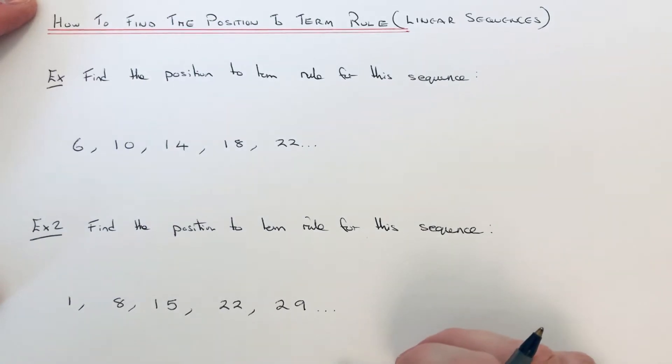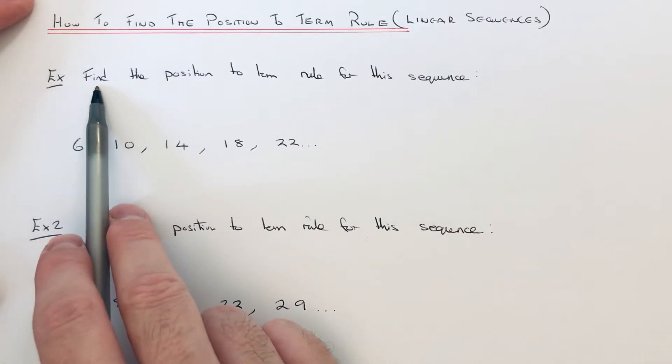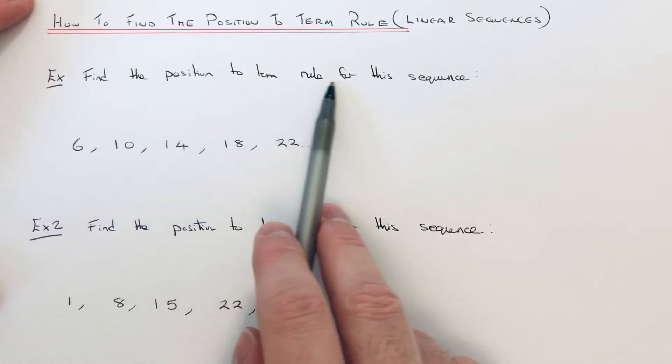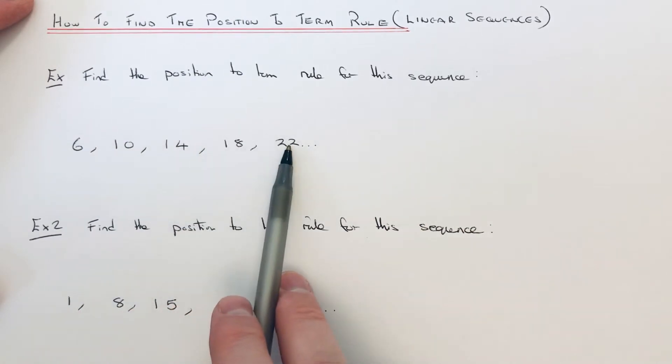Hi guys, welcome back. Today I'm going to show you how to find the position-to-term rule for a linear number sequence. Let's have a look at the first example: find the position-to-term rule for this sequence: 6, 10, 14, 18, 22.